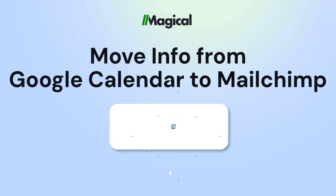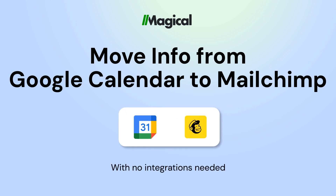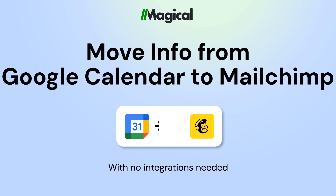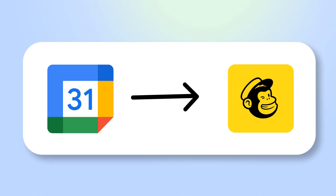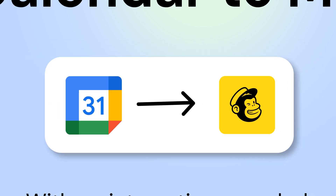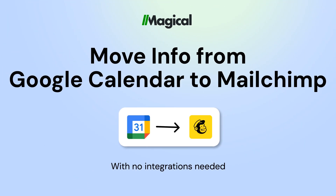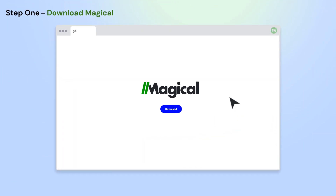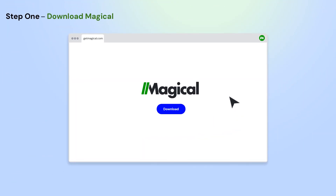Tired of copy-pasting between apps? With Magical, you can connect apps and move information from one app to another without any code or integrations. It's easy! Here's how it works in three simple steps.